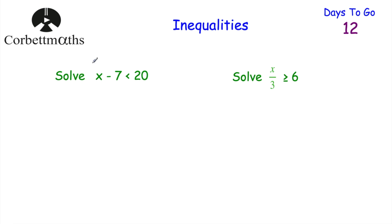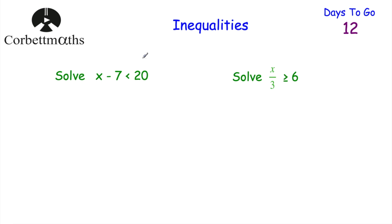Here we've got some solving inequalities questions. We've got: solve x subtract 7 is less than 20, and solve x over 3 is greater than or equal to 6. In terms of solving inequalities, we can solve them in the same way that we solve equations — we just need to make sure that instead of using the equal sign, we use the inequality symbol. Feel free to press pause and solve these inequalities now.